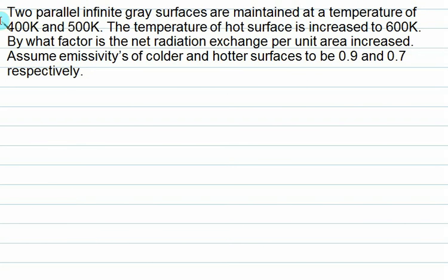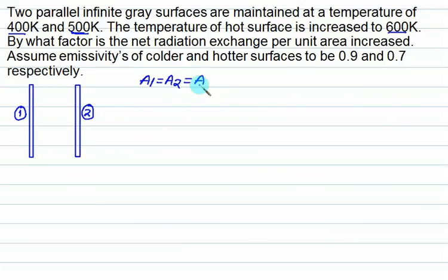Two parallel infinite gray surfaces are maintained at 400 K and 500 K. The temperature of the hot surface is then increased to 600 K. By what factor does the radiation exchange per unit area increase? Assume emissivity of the colder surface is 0.9 and the hotter surface is 0.7. Initially calculate for the 400 K to 500 K case. A1 = A2 = A.